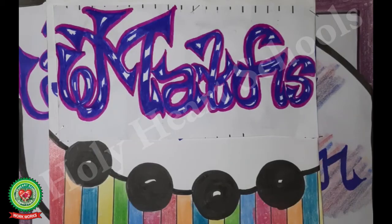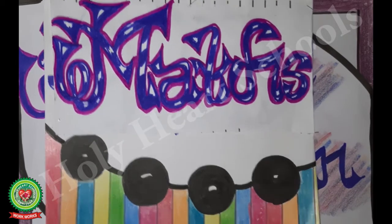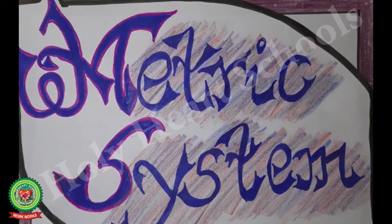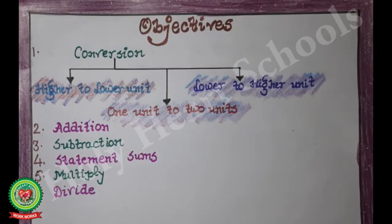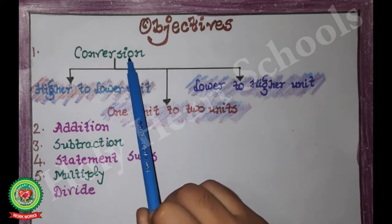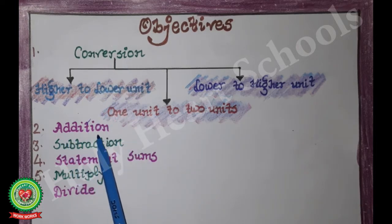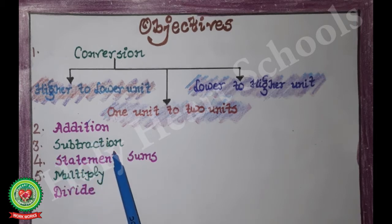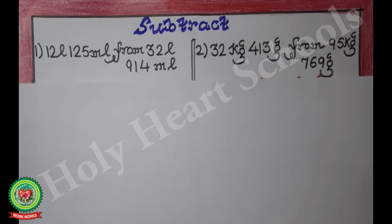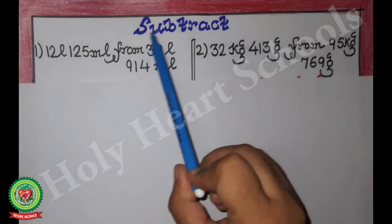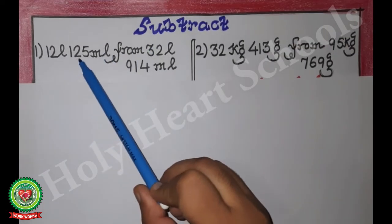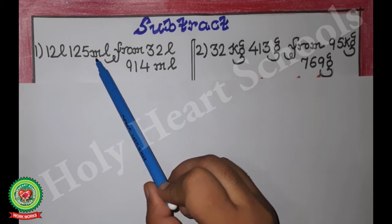Hello students, welcome to the maths class. In chapter Matrix System we have already done topics conversion and addition. Today I'll discuss with you the topic subtraction. To understand this topic, let's take some examples. Subtract 12 liters 125 milliliters from 32 liters 914 milliliters.